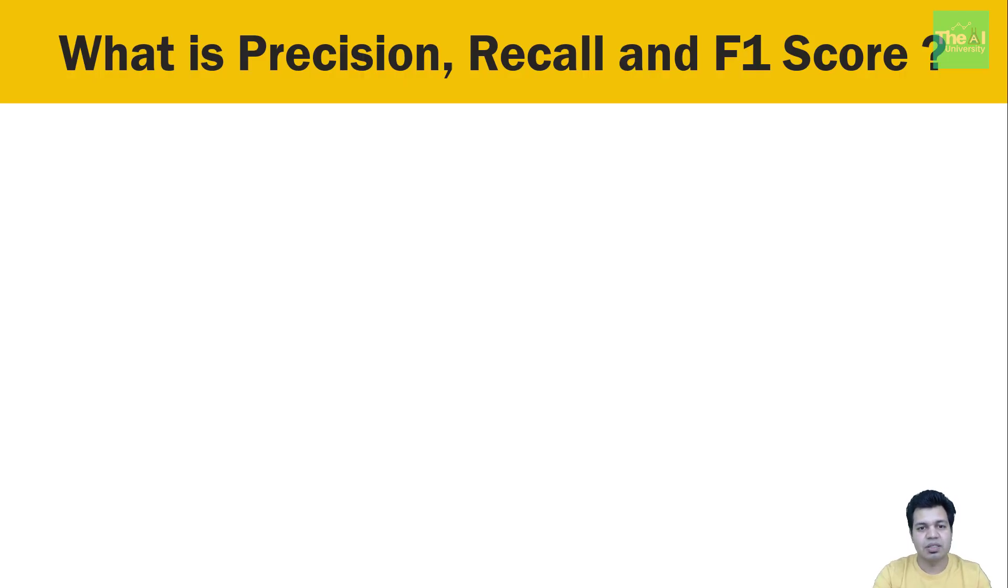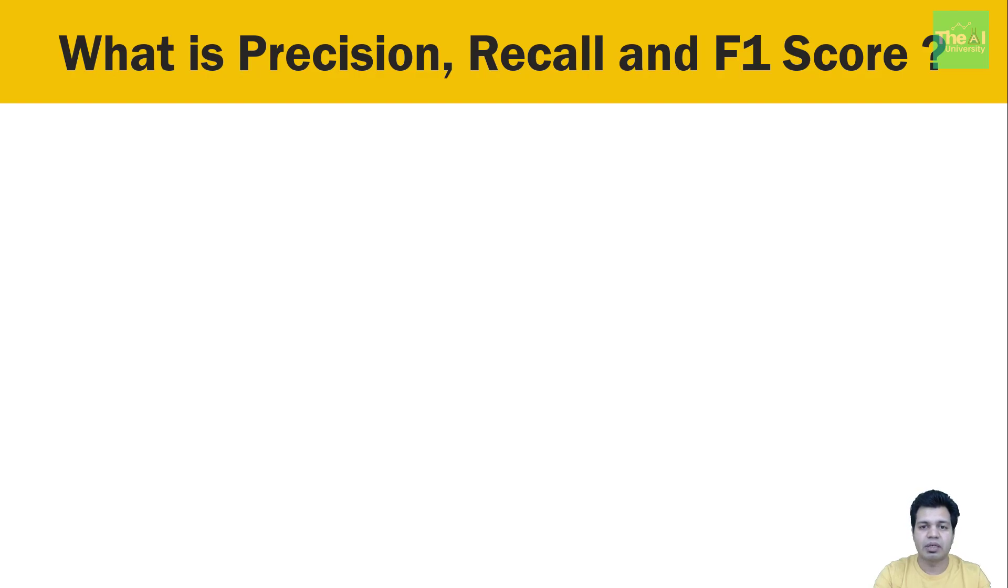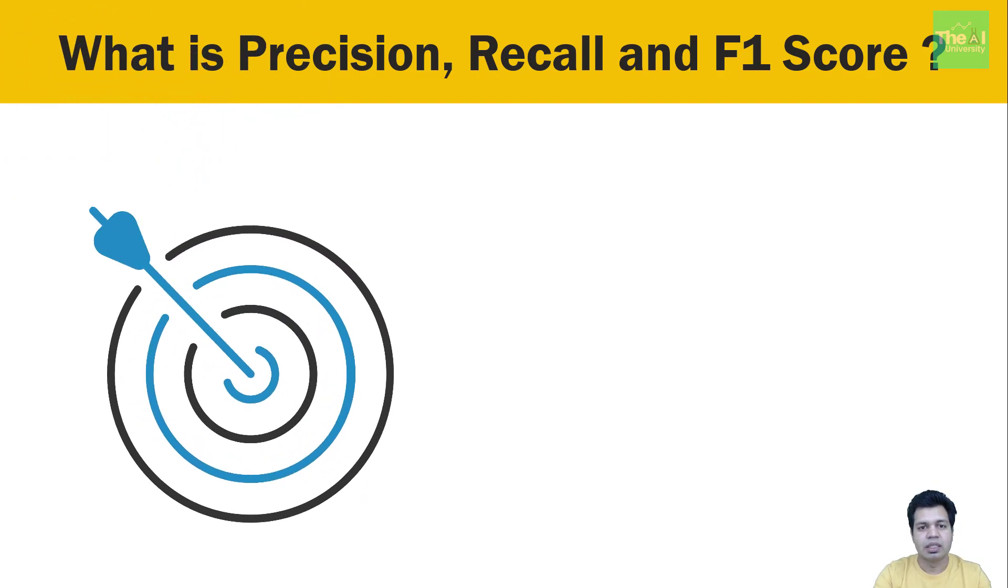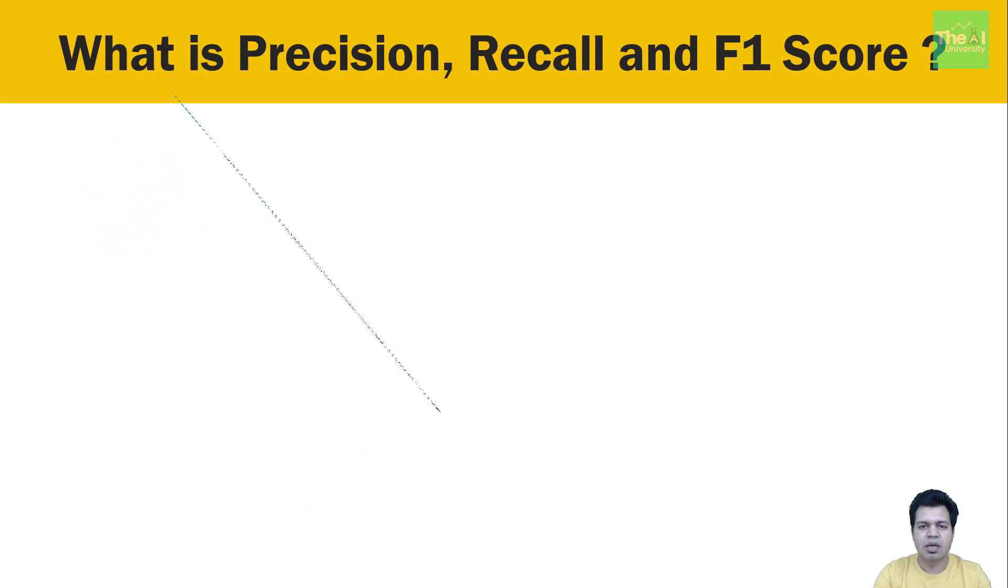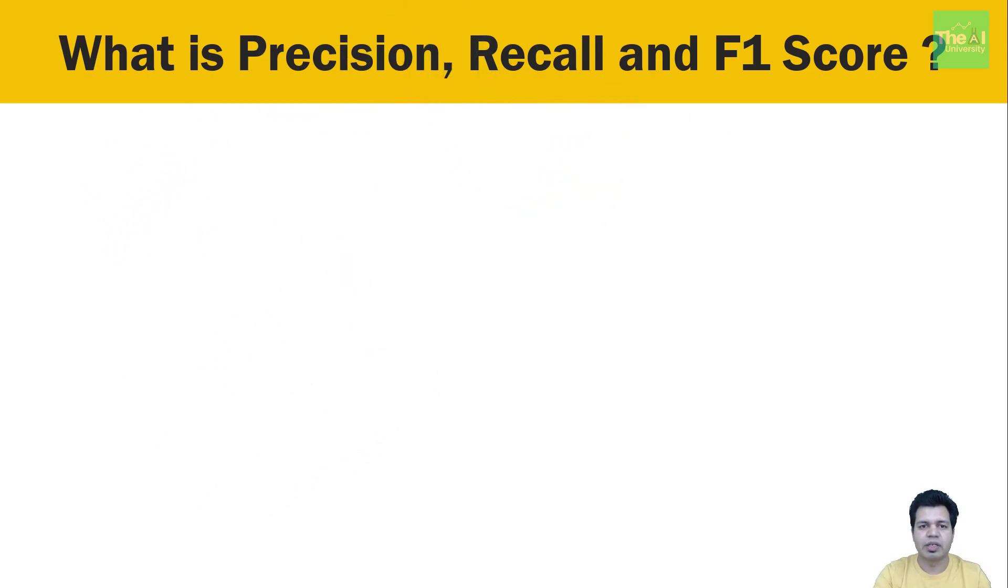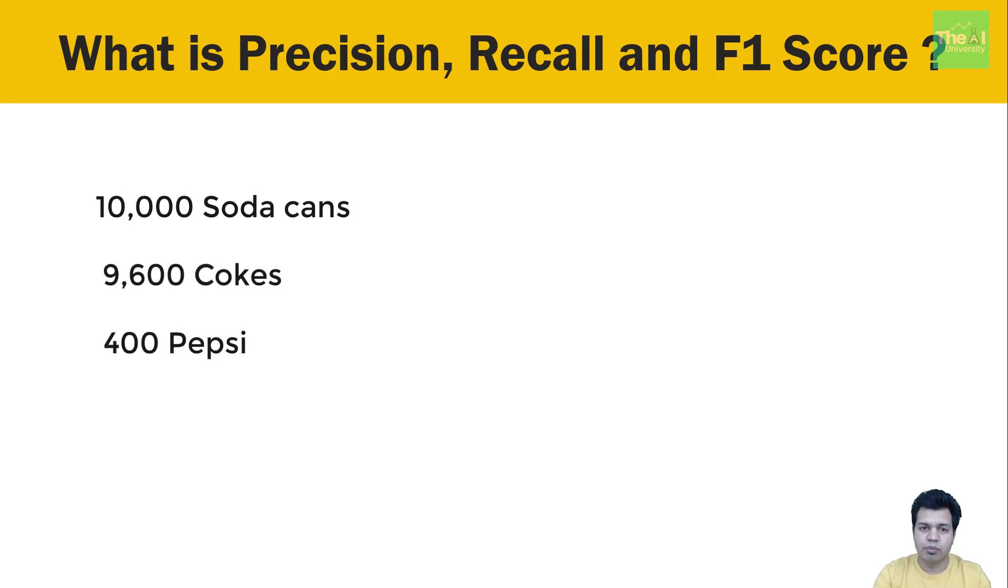There may be a case that the model is resulting in better accuracy but is failing to understand the data properly and hence may perform poorly when provided with varied data. For example, consider we have 10,000 soda cans and we have 9,600 cokes and 400 pepsi cans out of it, and we have a machine learning model that classifies soda as coke.